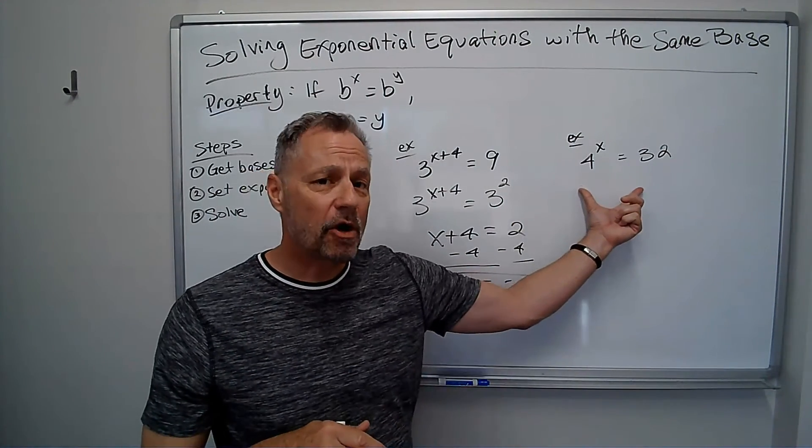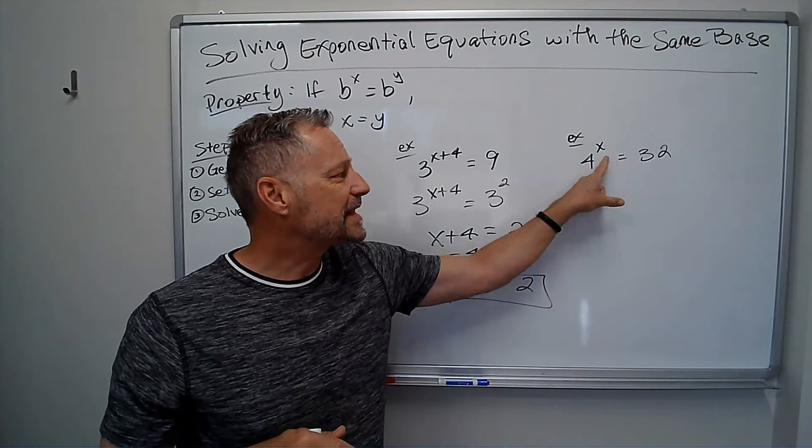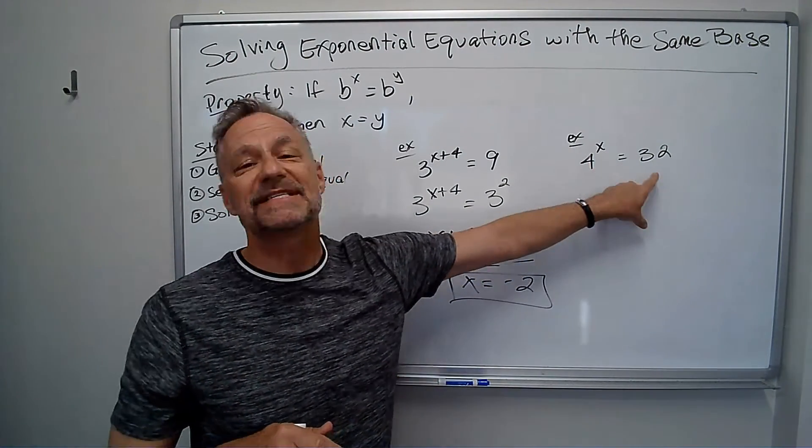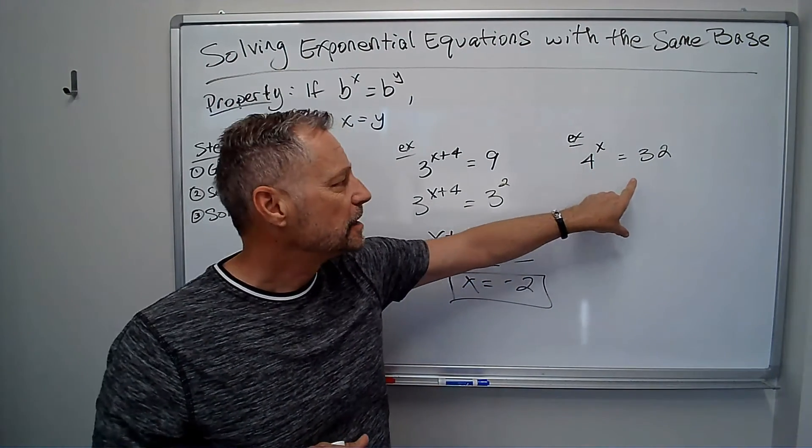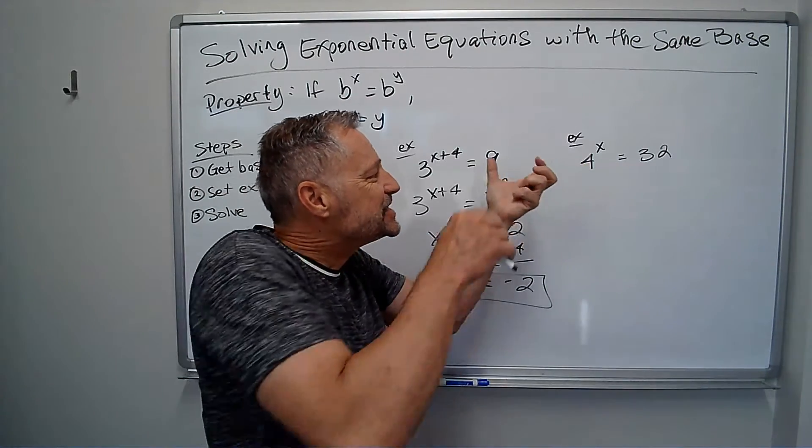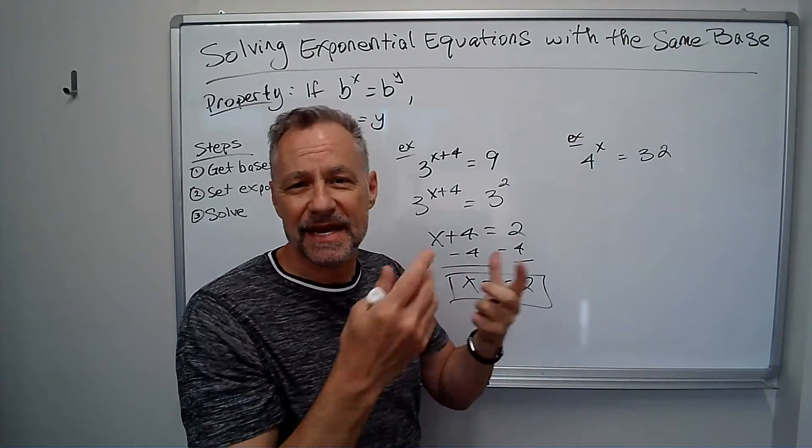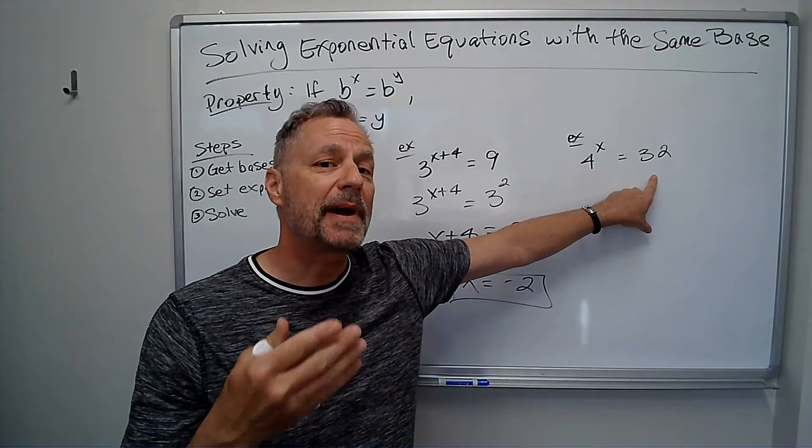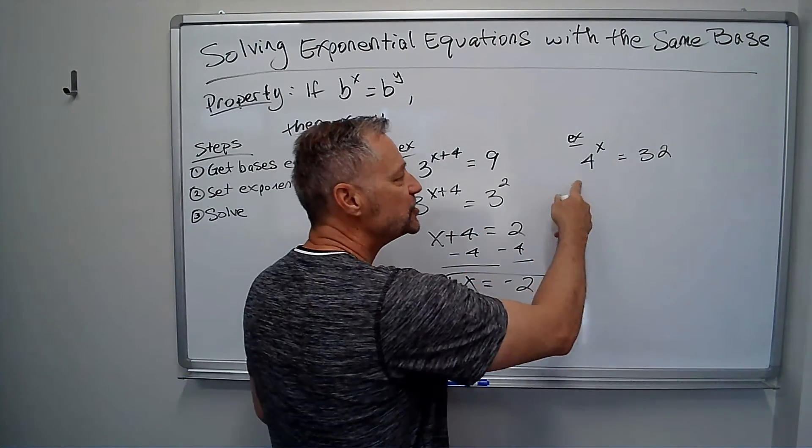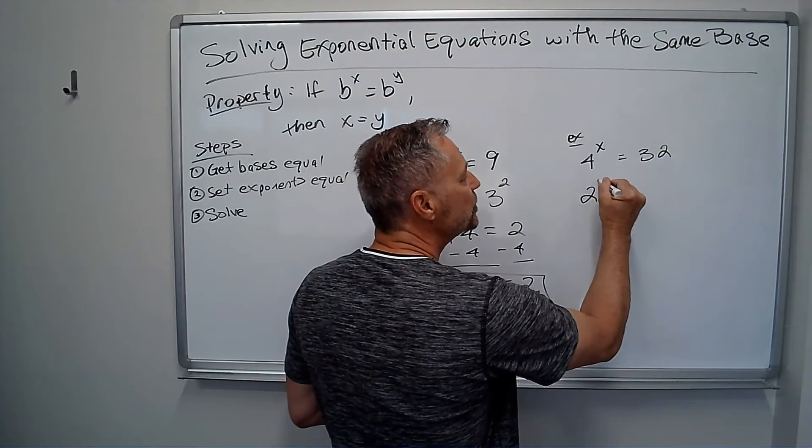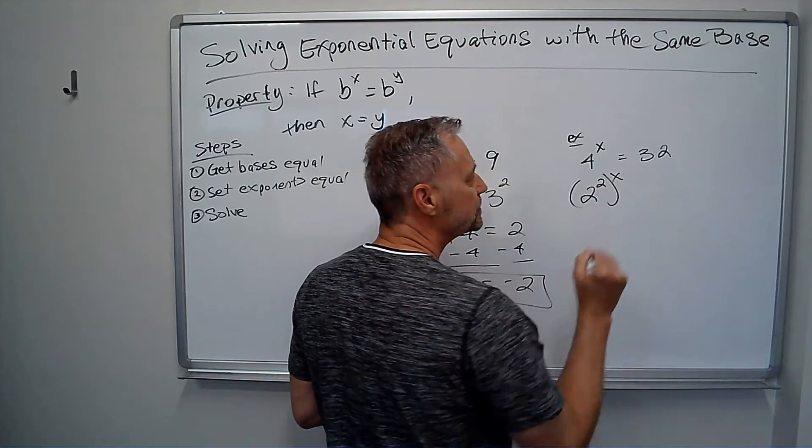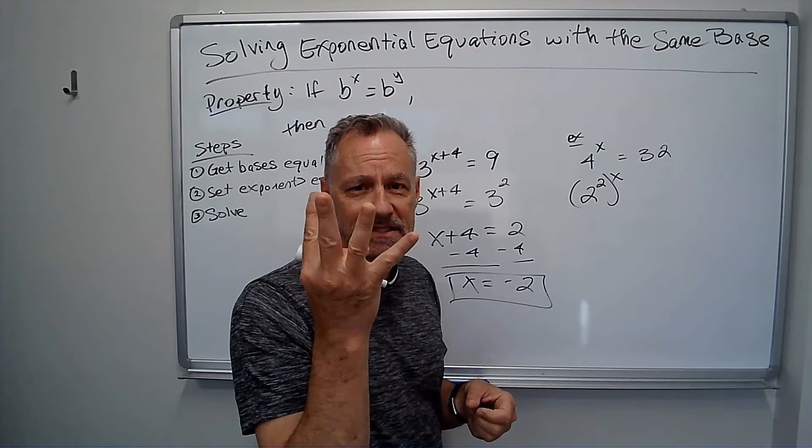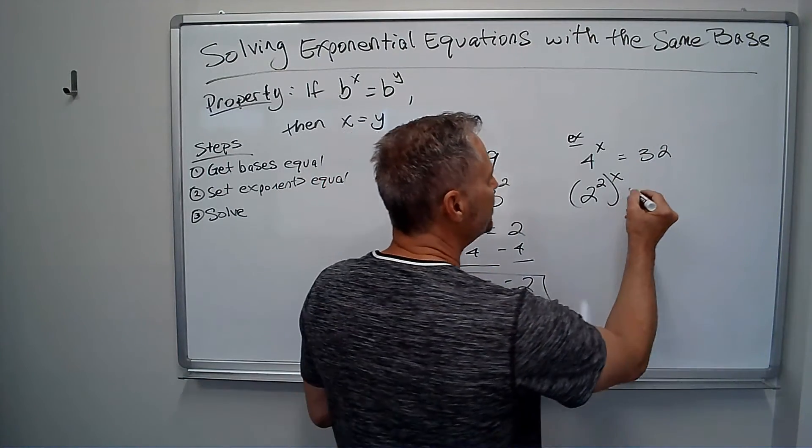This one a little bit harder, because I've got 4 to the x. Well, 4 to the second is 16, but 4 to the third is 64. So it's not just a nice 4 to some power that I can see some whole number, but both 4 and 32 are powers of 2. So what I can do is say, this 4 is really 2 to the second, and 32—2, 4, 8, 16, 32—it's 2 to the 5th.